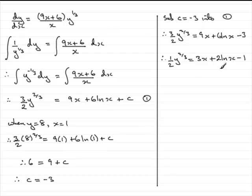If I times through by 2, we get y to the 2 thirds equals 6x plus 4 times the natural log of x minus 2.